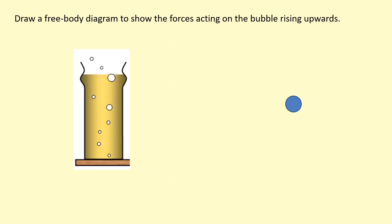Here we have a bubble rising, so we have the weight of the bubble acting downwards, and the upthrust pushing it upwards. Because the bubble is going upwards, there is a drag force acting in the opposite direction to motion — so acting downwards. This drag force is due to collisions between the particles in the bubble and the particles in the liquid.